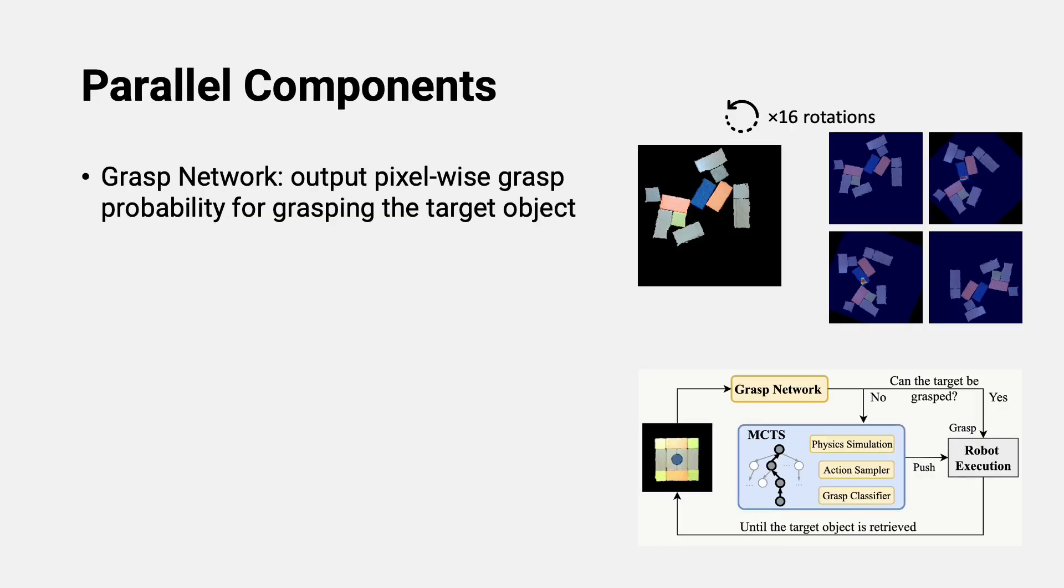We also need several other components that work in synergy to solve the task. Outside MCTS, we have a grasp network with rotations that produces pixel-wise grasp actions for grasping the target object. The pixel with the highest probability is the best grasp candidate.